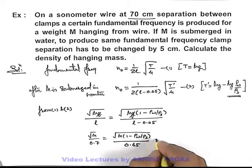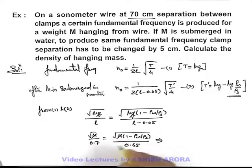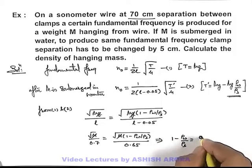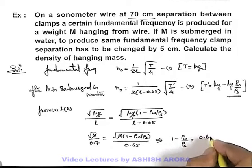We simplify this expression, m can also be cancelled. This will give us 1 - ρ_water/ρ_solid = (0.65/0.7)².